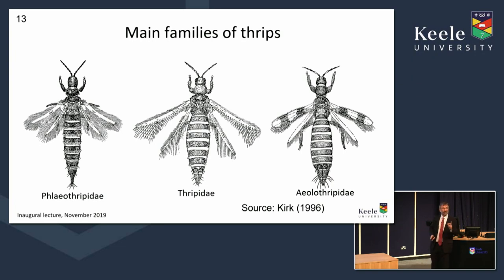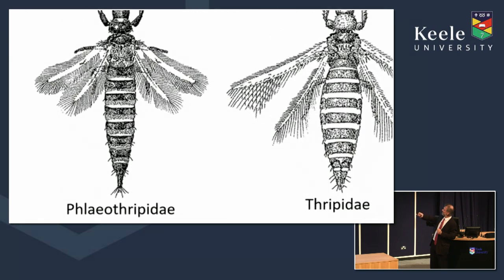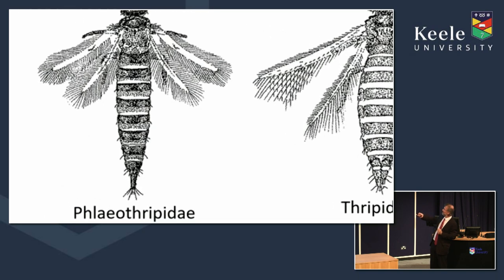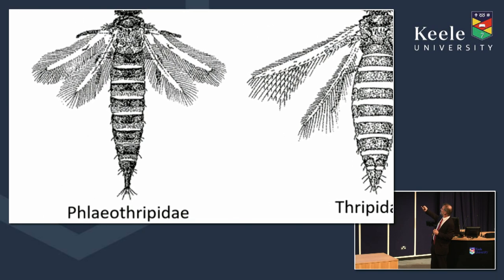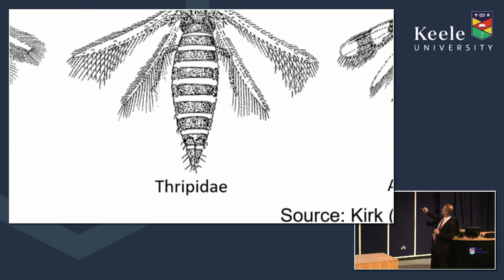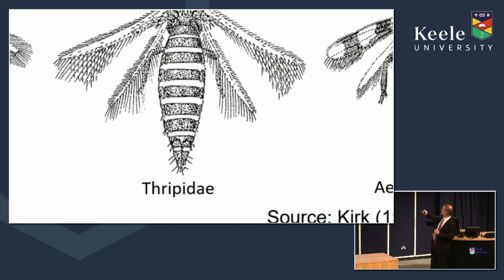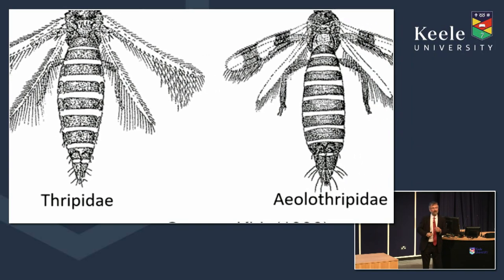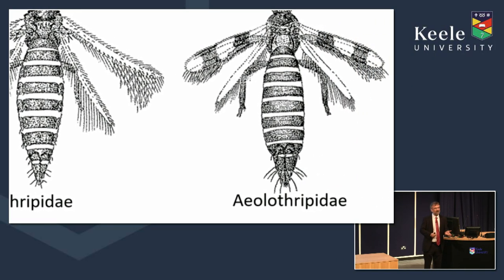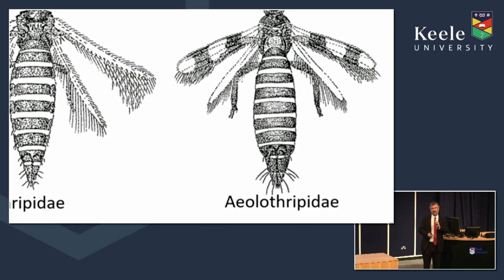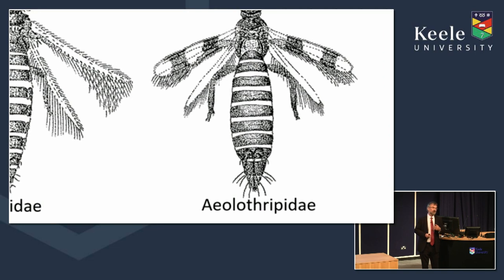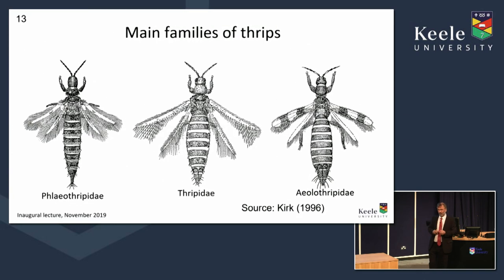Thrips come in different families. The Phlaeothripidae is one family, distinct because it has a kind of tube on the end of the abdomen. Most of the pests are in the Thripidae. And the Aeolothripidae has patterned wings, and many of these are predatory. So we have thrips that feed on plants and damage crops, some that are beneficial because they are predatory, and some that can be pollinators — a mix that can be damaging or beneficial.